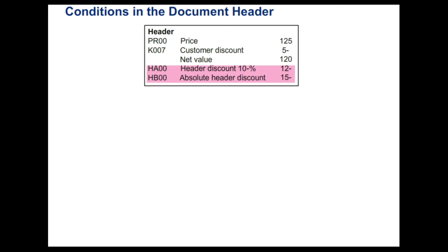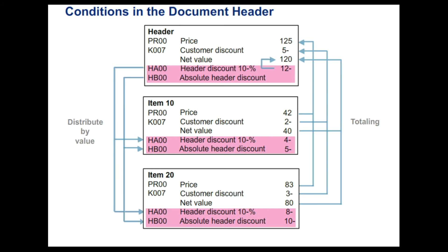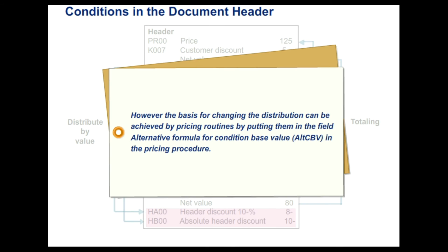Conditions in the Document Header. Conditions can also be entered at the Document Header level and are known as Header Conditions and are valid for all items in the Document. The Header Conditions are automatically distributed to the line items based on the Net Value. However, the basis for changing the distribution can be achieved by pricing routines by putting them in the field Alternative Formula for Condition Based Value ALT-CBV in the Pricing Procedure.